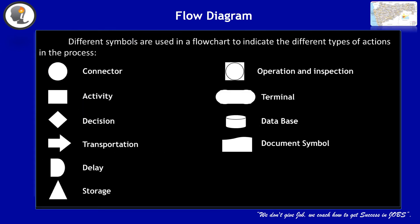There are different symbols used in flow charts to indicate different ways of actions in the process. We use a circle for the connector. Rectangle is used for representing an activity. Diamond represents decisions. Arrow indicates transportation. D indicates delay. Triangle represents storage.